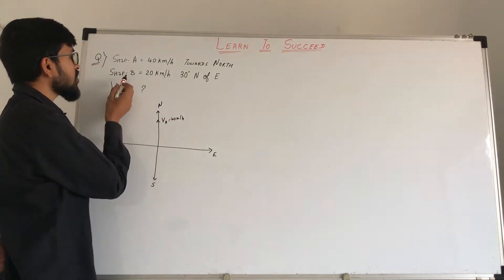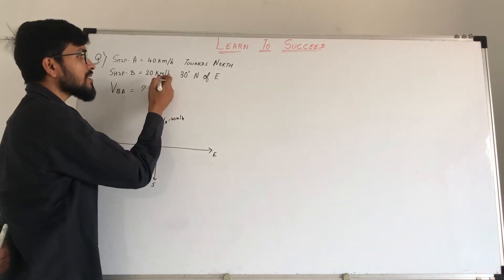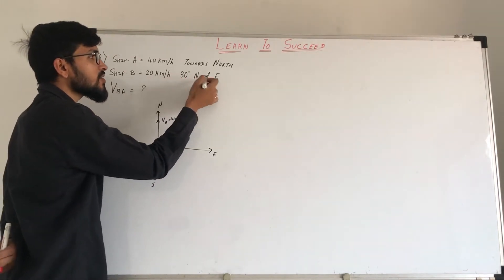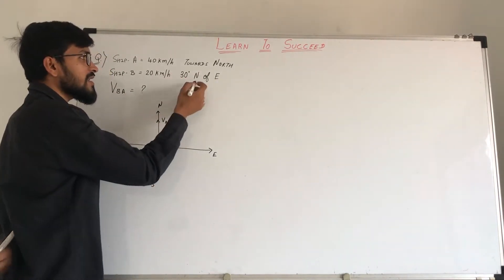Then for ship B, it has a velocity of 20 km per hour, 30 degrees north of east.